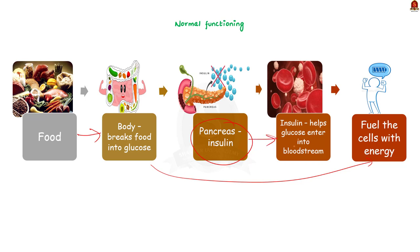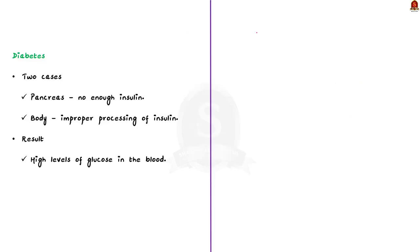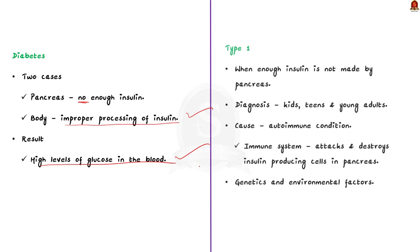That is the normal process which happens in everyone's body. In case of diabetes, the pancreas either won't make enough insulin, or the body cells won't use the insulin produced by the pancreas properly. This leads to high levels of glucose in the blood, which in turn causes symptoms of diabetes. Now let us see the different types of diabetes. There are four different types.